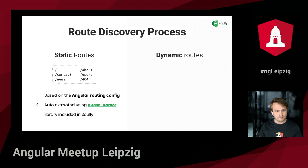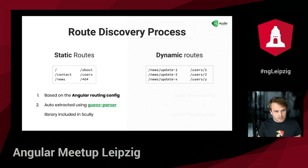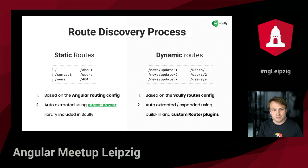Opposed to that, we have dynamic routes. Those routes typically have an identifier in their path that can be used to look up the correct data in the database. To make these pages discoverable we need to teach Scully how to discover them — we do this by defining the routes in the Scully config file and building custom router plugins to feed the data to Scully.